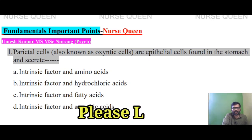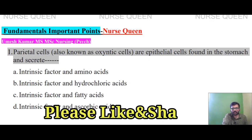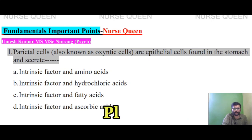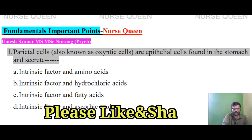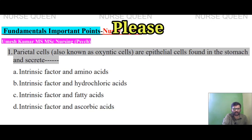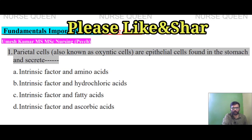First question: Parietal cells, also known as Oxyntic cells, are epithelial cells found in the stomach and secrete which of the following? Options: intrinsic factor and amino acids; intrinsic factor and hydrochloric acid; intrinsic factor and fatty acids; intrinsic factor and ascorbic acid.